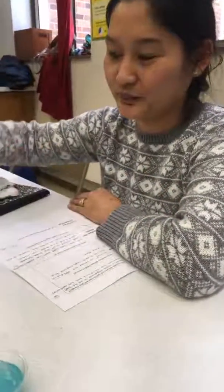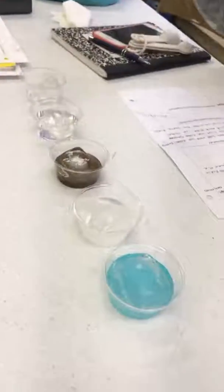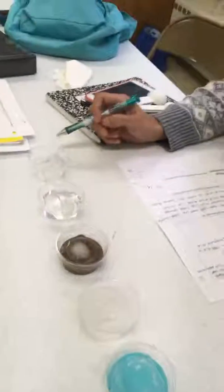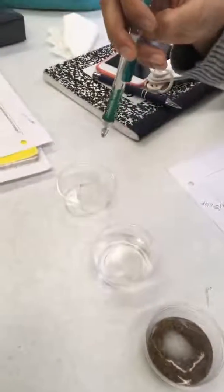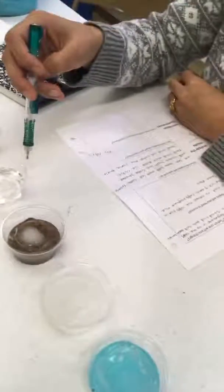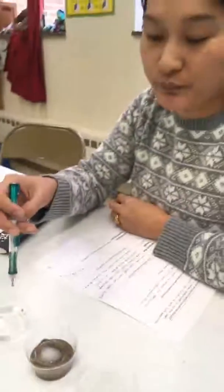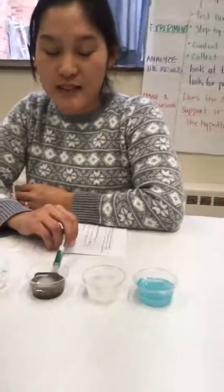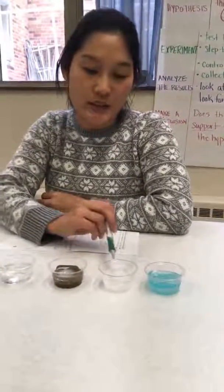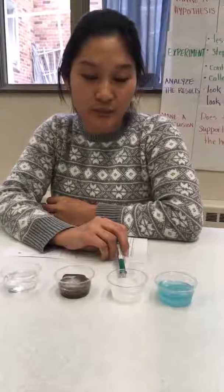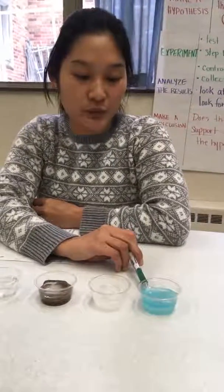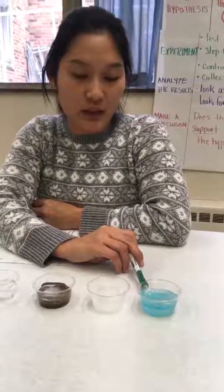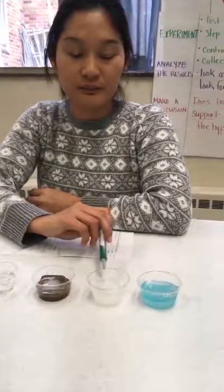Can you tell me about the substances that you used in this experiment? We put just ice cube in the cup — no other substances. And in this cup we put the water and ice cube. In this cup we put the raw salt and ice cube.